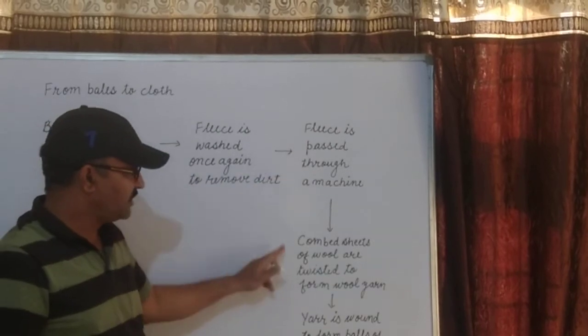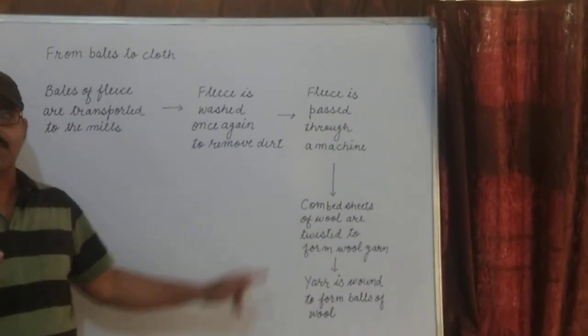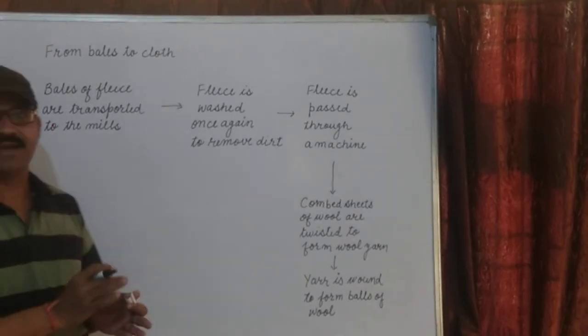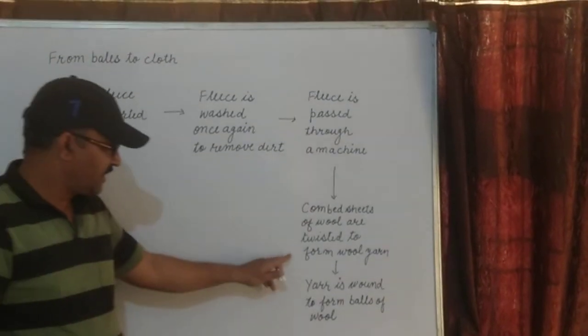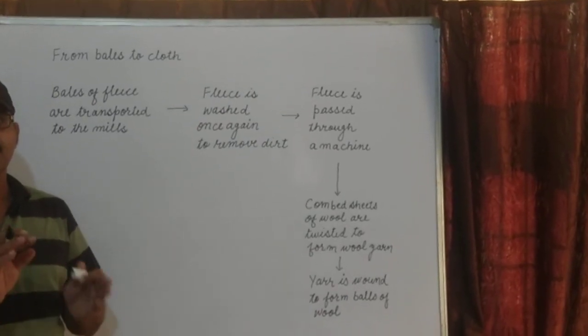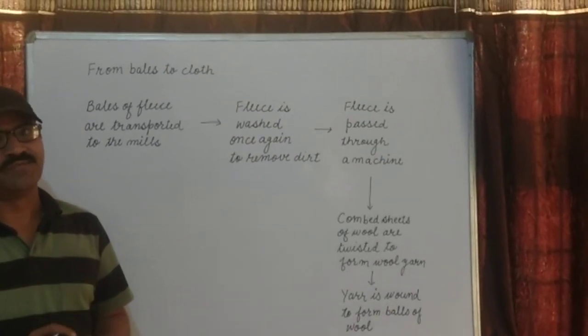Here, this machine. And then combed sheets. Combed fibers are further twisted into threads of wool called wool yarn. And then, the yarn is wound into balls of wool.